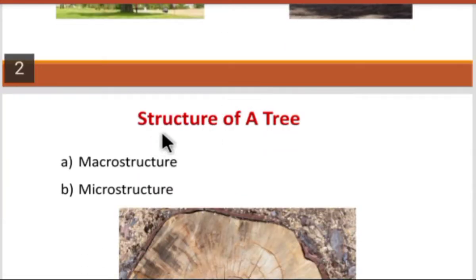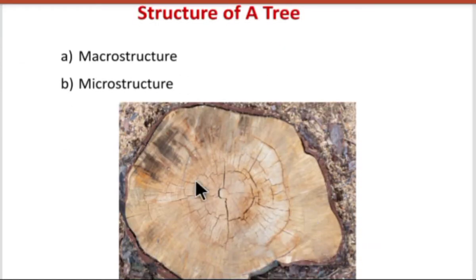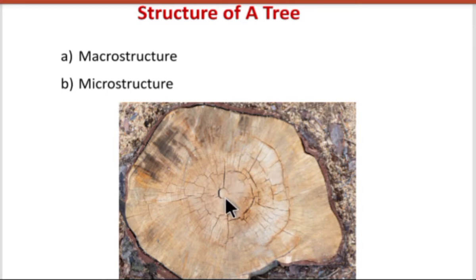Next is the structure of a tree. There are two types of structure: the first one is macro structure and the second one is micro structure. When you cut a tree, the inside structure you can see with the naked eye — that structure is called the macro structure.